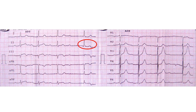As its morphology is similar to those of the previous QRS complexes, this is an escape junctional contraction. The fourth P wave is blocked.